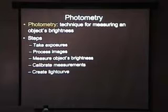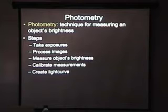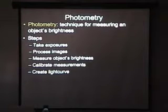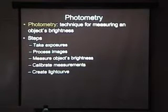Photometry is the technique we use to measure the brightness of asteroids. The steps are: take the exposures, process the images to get rid of things that would mess up your measurements, measure them, calibrate, and then make your light curve.